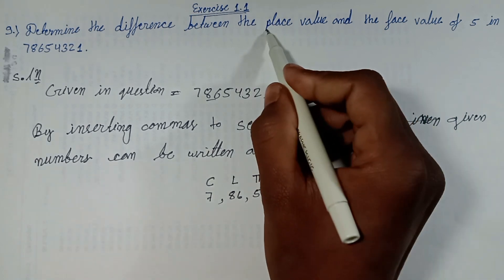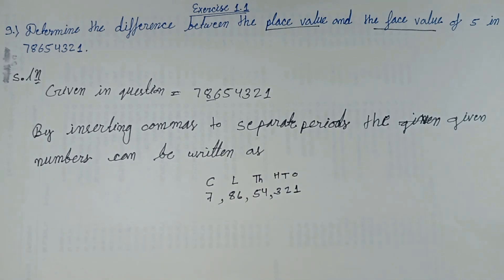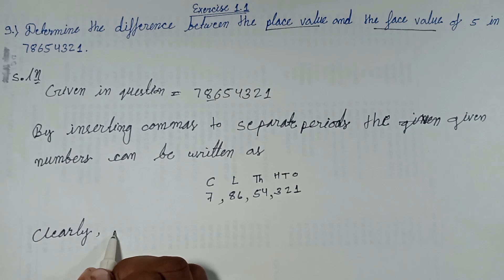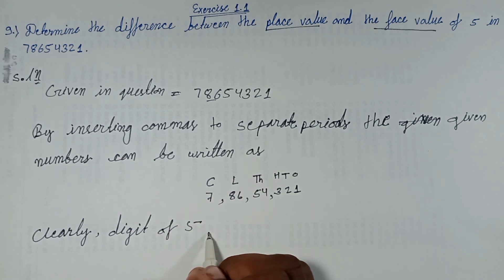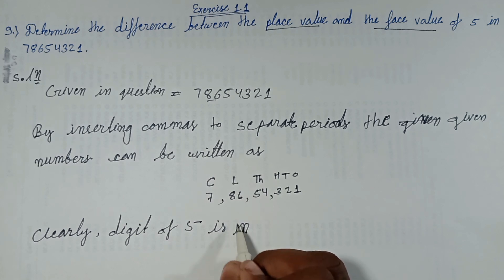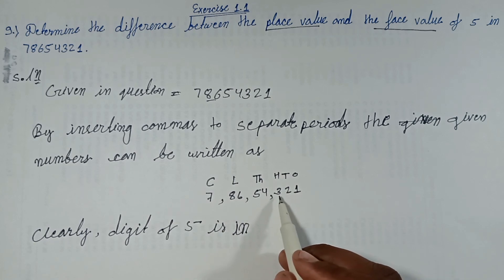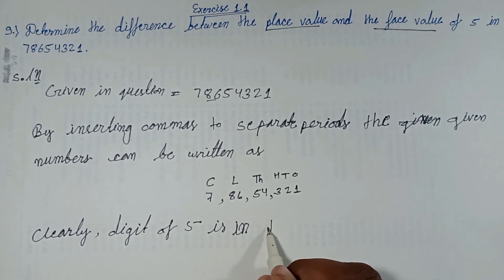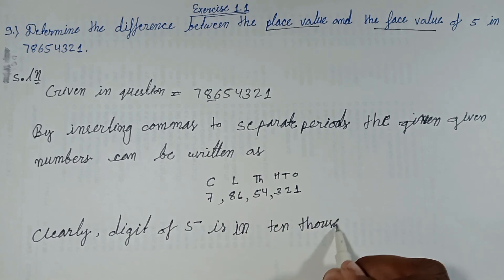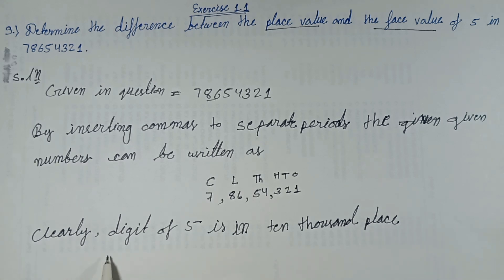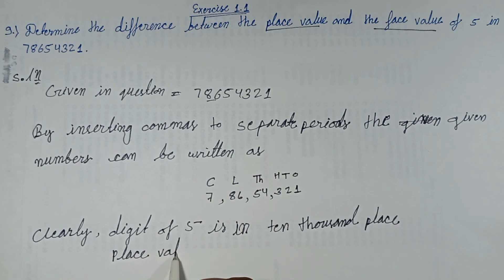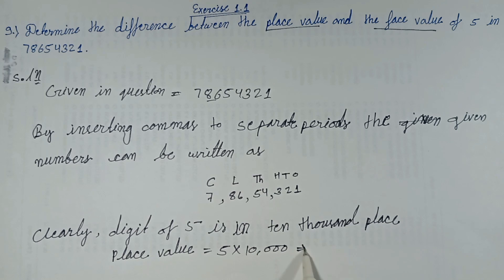Now let's find the place value and face value of the digit 5 clearly. The digit 5 is in the ten-thousands place. So the place value of 5 is 5 multiplied by ten thousand, which equals fifty thousand.